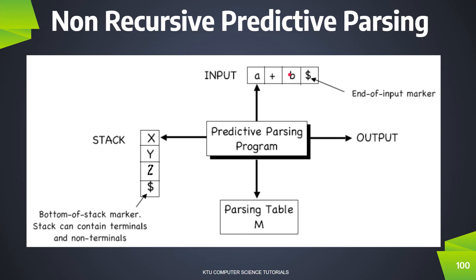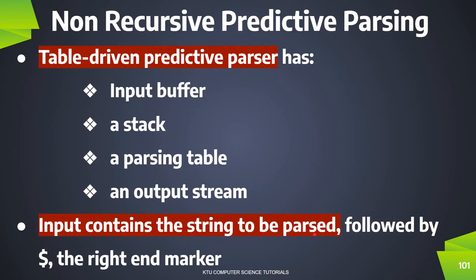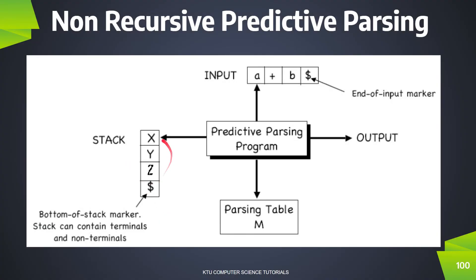The Input Buffer contains the input string. We use the input string as an end-of-input marker. Input contains the string to be parsed, followed by $, the right-end marker. The second component is the Stack. We use the Stack with $ at the bottom as an end-of-input marker. The Stack contains terminals and non-terminals.